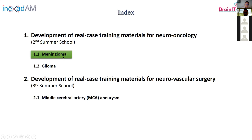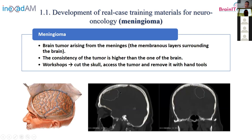For the first case — the meningioma case — a meningioma is a brain tumor that arises from the meninges, the layer surrounding the brain. The tumor in these CT images can be observed here; you can see it's very close to the meninges because it starts there. Our neurosurgeons told us we should develop synthetic models giving more consistency to this tumor than to the brain, so we need a different material. The idea was to develop synthetic models using these real scan images, producing maybe 10 different models so students could practice cutting the skull and removing the tumor.